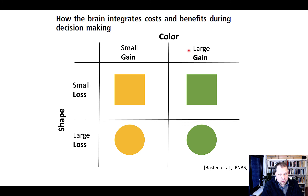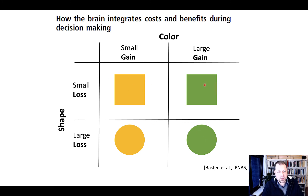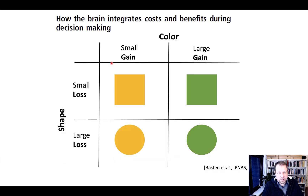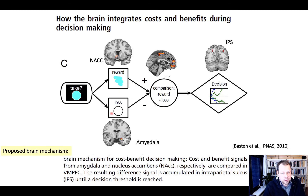Participants make a decision in the scanner about whether they should take a gamble. The color indicates the magnitude of the gain and the shape indicates the magnitude of the loss — yellow for small gain, green for large gain, square for small loss, and circle for large loss. The ideal gamble to accept would be a green square — large gain, small loss.